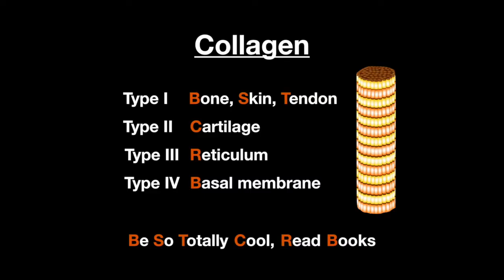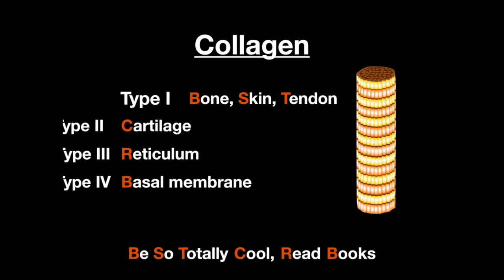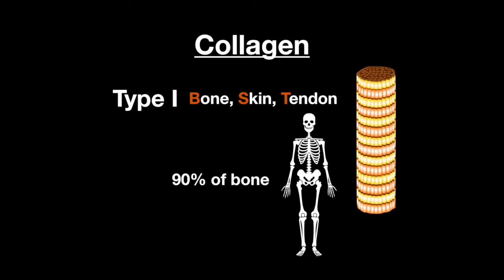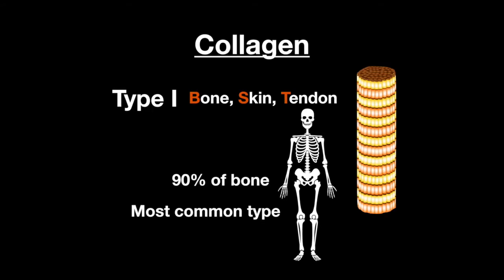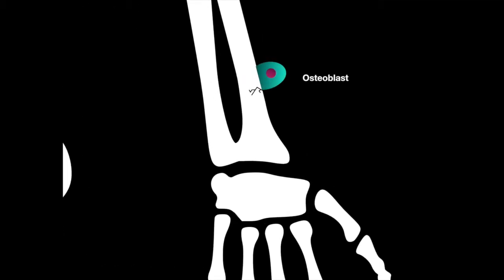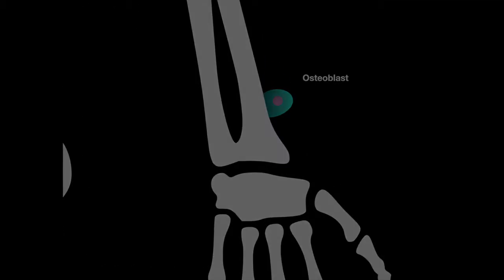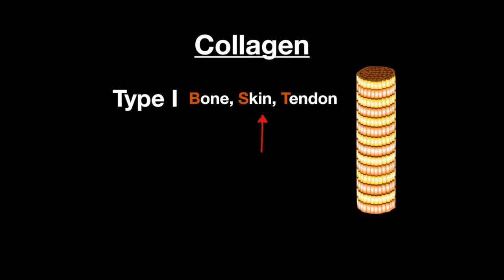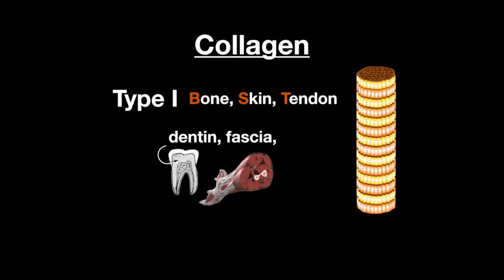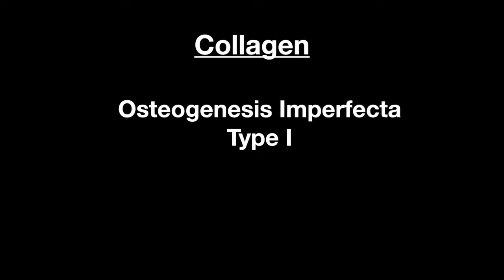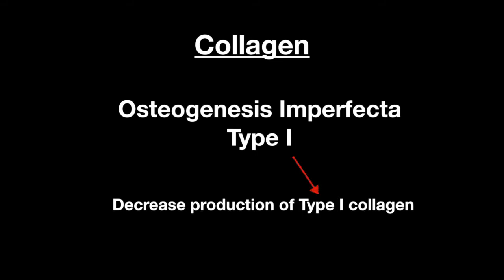Let's go over these types in a little more detail. Type 1 composes 90% of bone and is the most common type of collagen. The cells that make bone are osteoblasts. Type 1 collagen also makes skin and tendon, but also dentin, fascia, and the cornea. In osteogenesis imperfecta type 1, there is a decreased production of type 1 collagen.